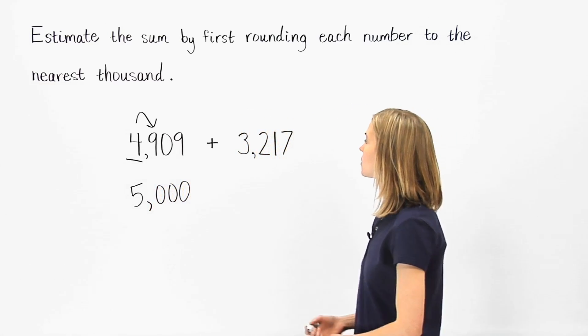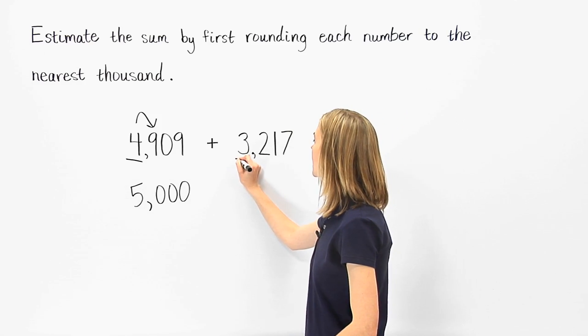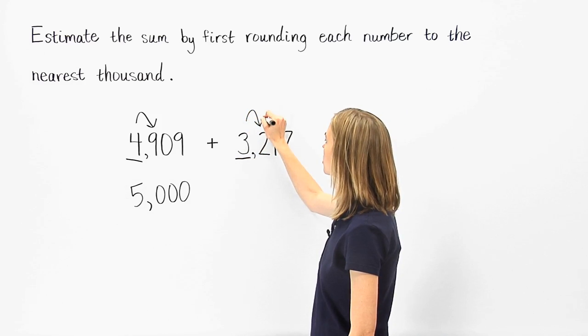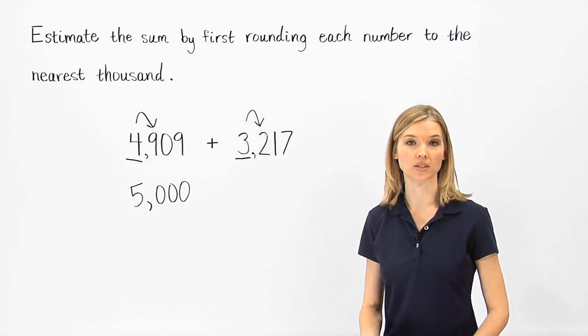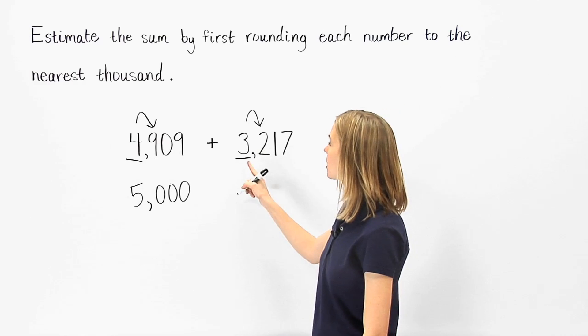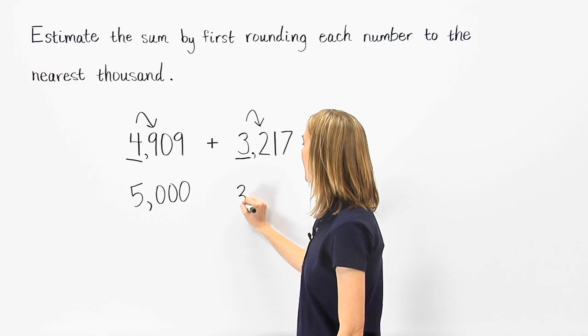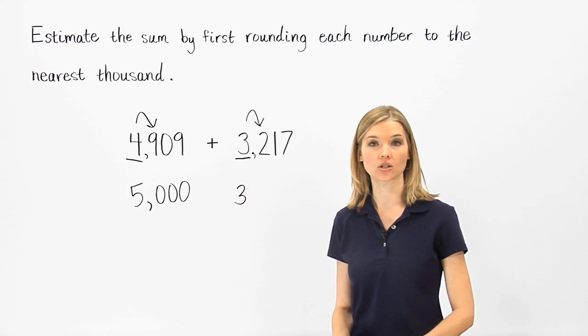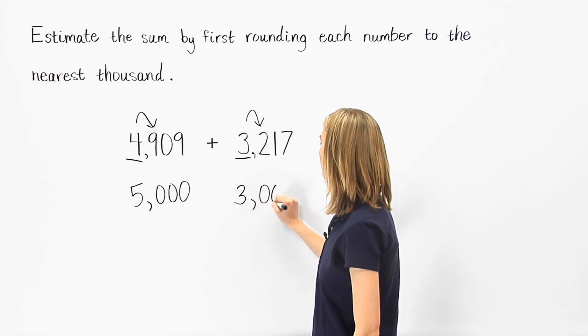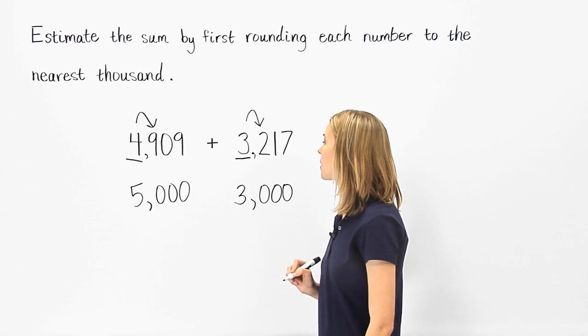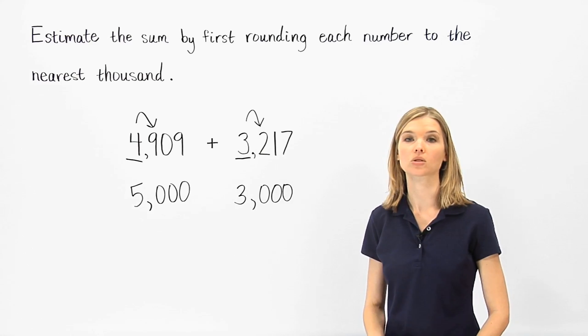In 3,217, the 3 is in the rounding place, so we look at the digit to the right of 3. The 2 in this position tells us to round down, so the digit in the rounding place, 3, stays the same, and we change all digits to the right of the 3 to 0. So 3,217 rounds down to 3,000.